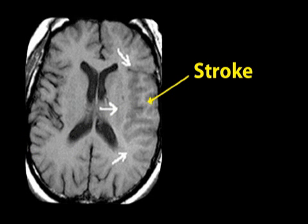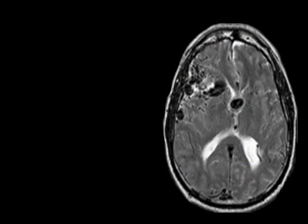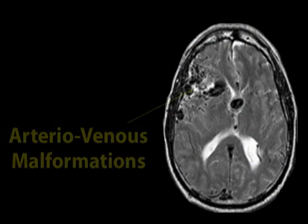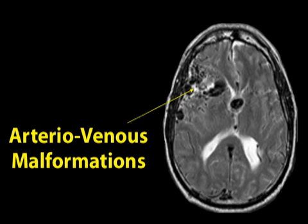This MRI shows a region of stroke, which results from a sudden blockage of blood flow to the brain. Seizures don't cause strokes, but strokes can lead to seizures when brain cells are injured and can no longer control their electrical activity. One stroke can cause ongoing seizures for years. Abnormal blood vessels in the brain, such as aneurysms, arteriovenous malformations, or cavernous angiomas, can all cause seizures.